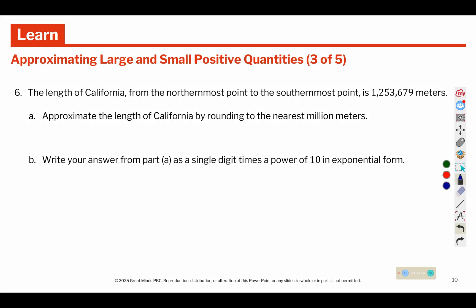We are rounding this one to the nearest million. Is it closer to 1 million or 2 million? To be closer to 2 million, it needs to be 5 or more to round it up. So since it's a 2, it stays at 1 million. Write your answer as a single digit, which has a 1 in the front, times, there's 3, 6 place values behind it.